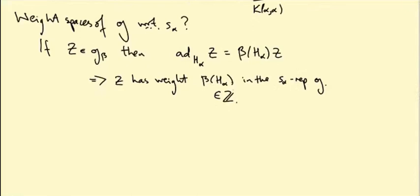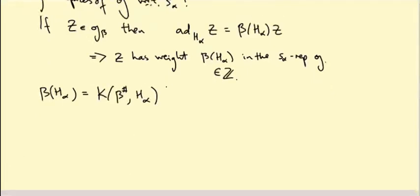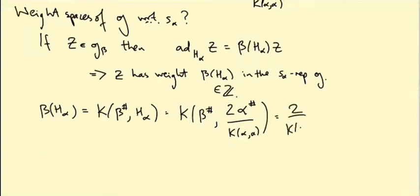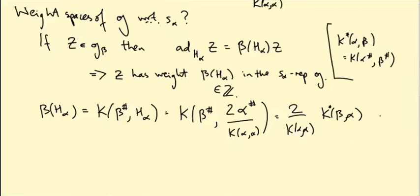Now what is beta of H_alpha? By definition of the killing form and the sharp isomorphism, this is K(beta sharp, H_alpha). That is K of beta sharp with 2 alpha sharp over K(alpha, alpha). Let's bring the 2 over K(alpha, alpha) outside. And then I have K(beta sharp, alpha), that is K(beta, alpha). So this should be a dual. Remember K dual of alpha beta is by definition K of alpha sharp beta sharp. That's how we define the dual of the killing form. So we're claiming this quantity is an integer.